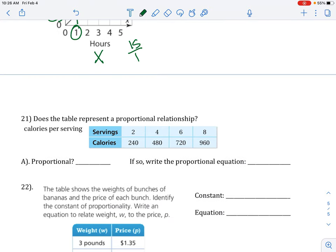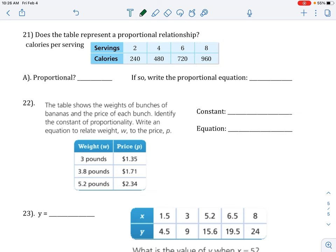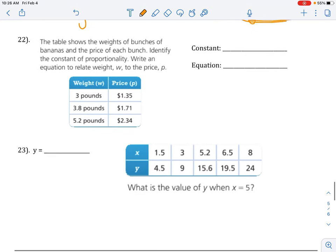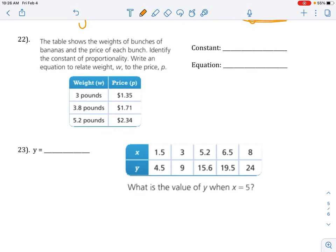Flip to the next page, last page. Number 21, does the table represent a proportional relationship? You see a table. Let's label it x and y and to see if it's proportional we do our y divided by our x. 240 divided by 2 is 120. The next pair of numbers gives you 120, all throughout the table. So is it proportional? Yes, because it has the same unit rate and the equation would be y equals 120x.